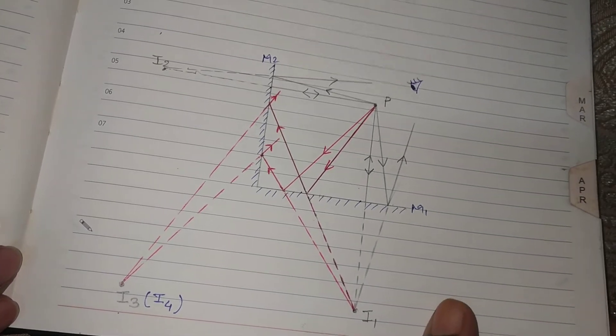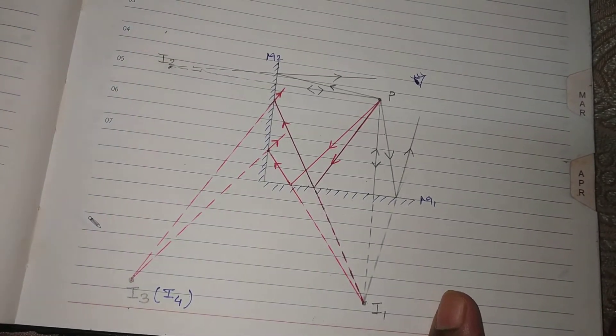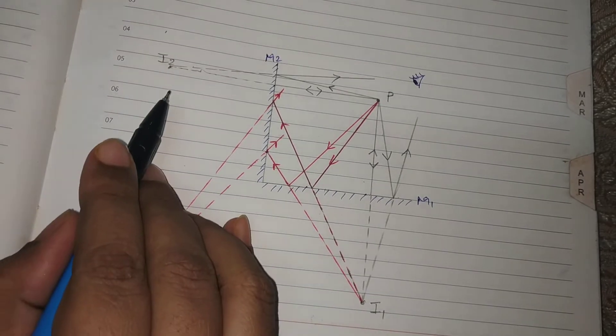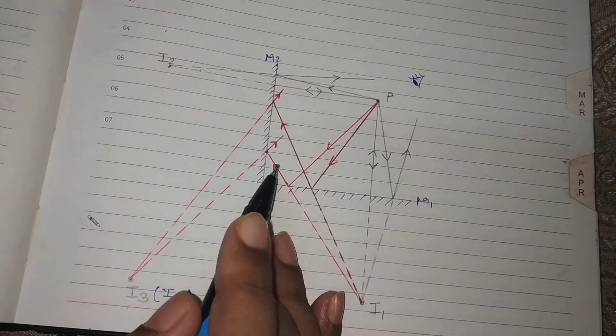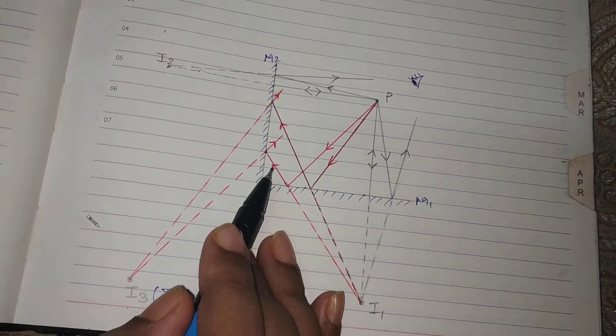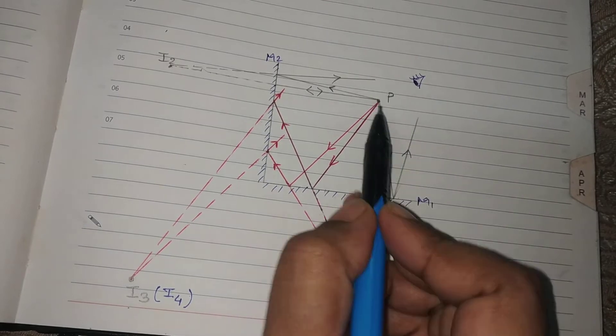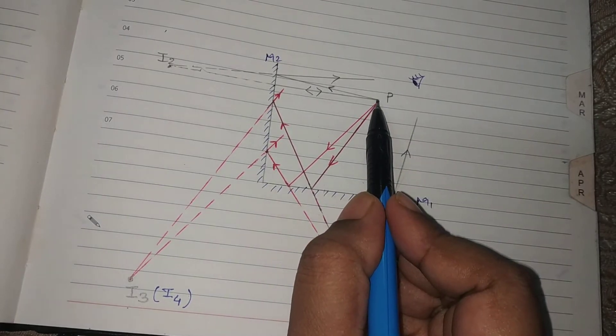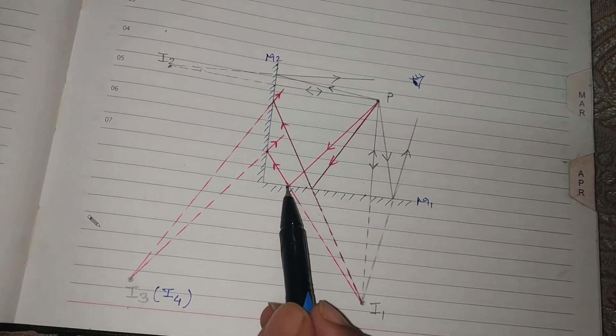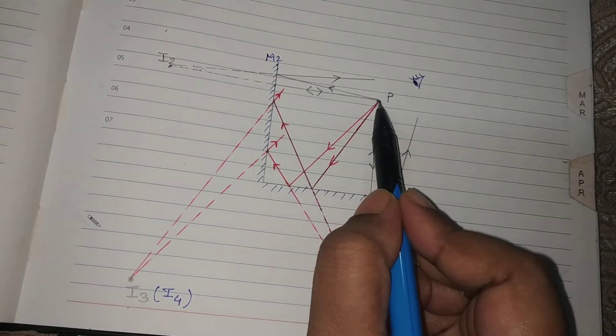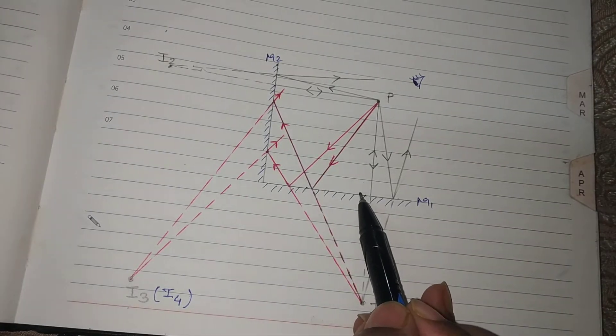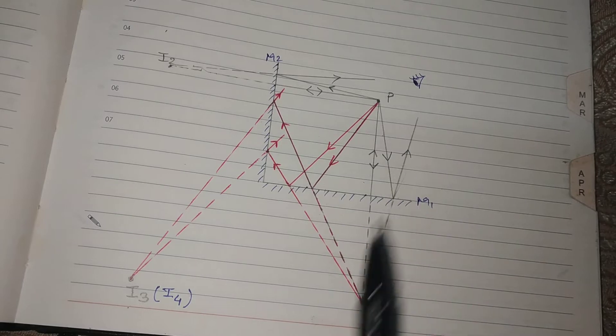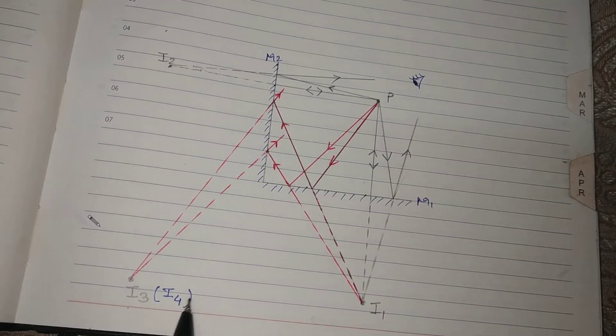So children, we have located three images I1, I2, and I3 from these particular rays. Now there is a possibility that the rays from P, instead of falling initially at M1, they are first striking the mirror M2 and then they are falling on M1. So in that particular situation, you get the fourth image here where I3 is formed.